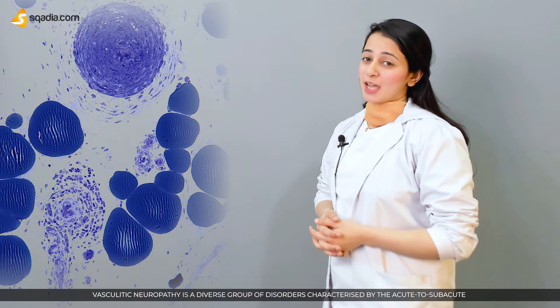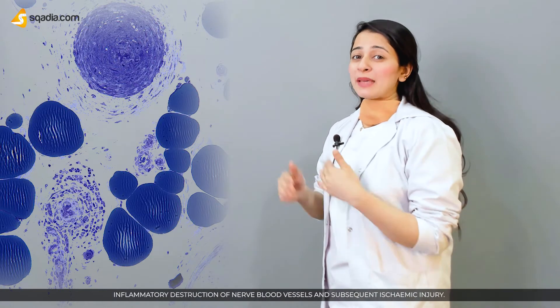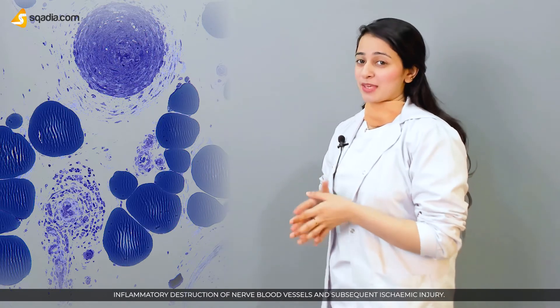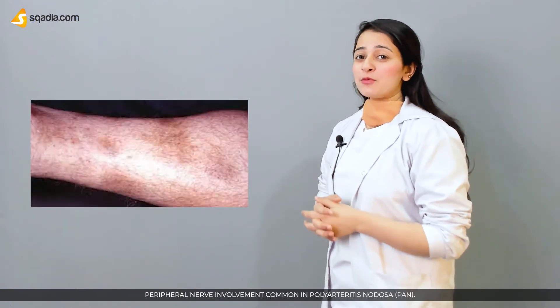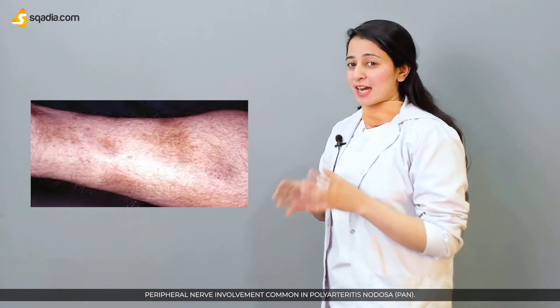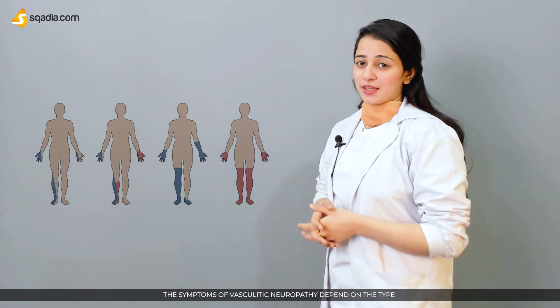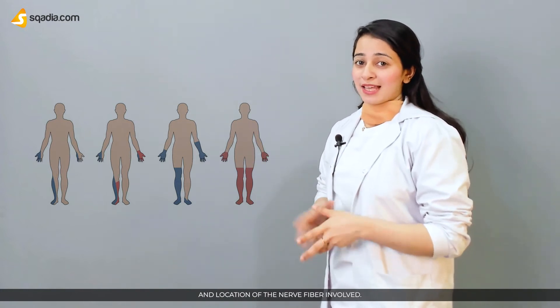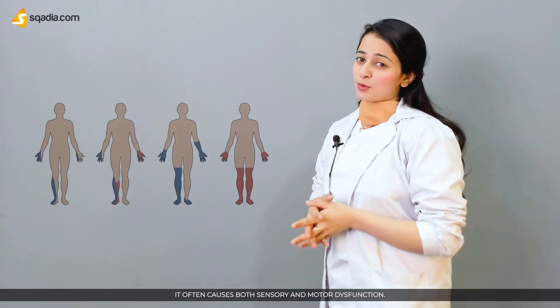Vasculitic neuropathy is a diverse group of disorders characterized by the acute to sub-acute onset of painful sensory and motor deficits that result from the inflammatory destruction of the nerve blood vessels and subsequent ischemic injury. Peripheral nerve involvement is common in polyarteritis nodosa. The symptoms of vasculitic neuropathy depend on the type and location of the nerve fiber involved, and it often causes both sensory and motor dysfunctions.